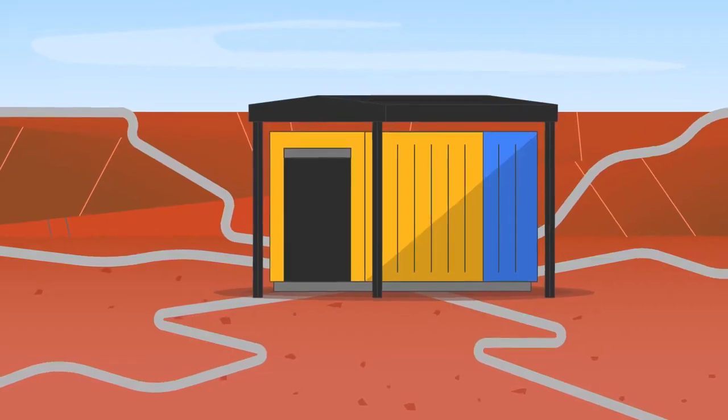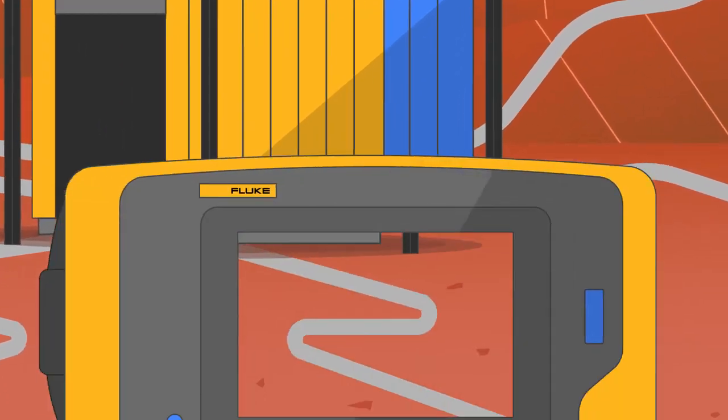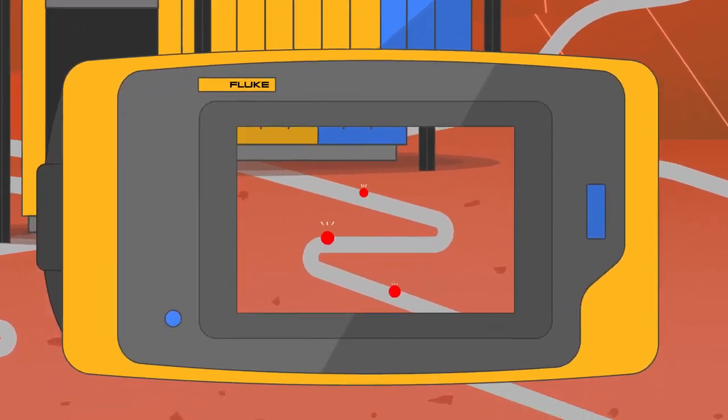The leading edge Fluke Sonic Imager enables any technician to quickly visualize compressed air leaks during production, saving you thousands of dollars in energy loss with no need to stop production.